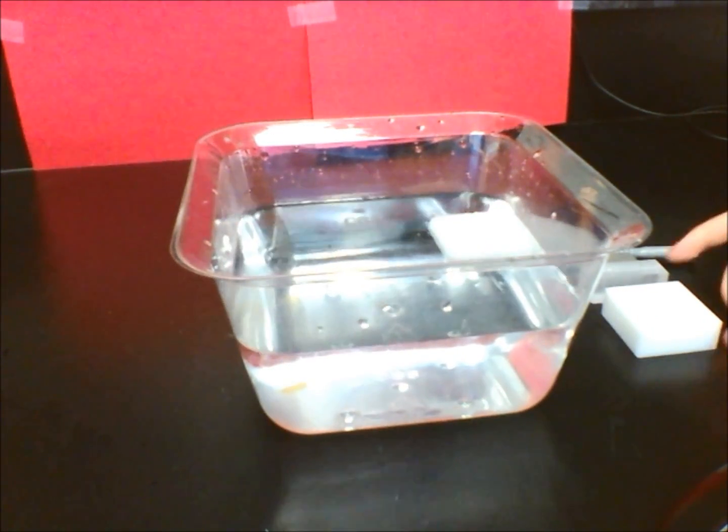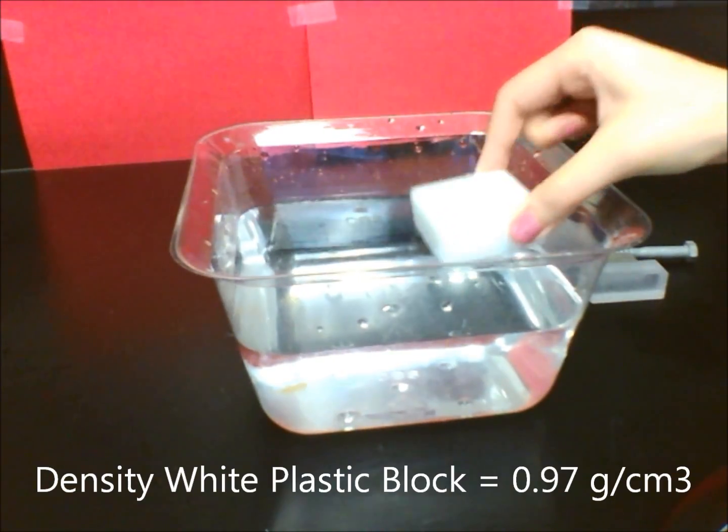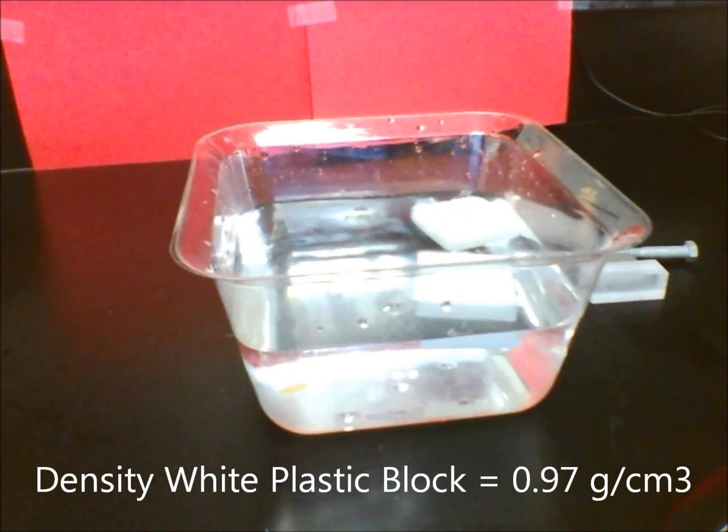And we can predict that the white plastic block, which has a density of 0.97 grams per cubic centimeter, to also float.